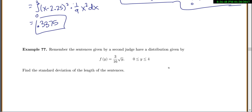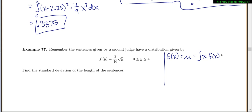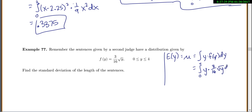Now a second judge has PDF f(y) = (3/16)√y, where y goes from 0 to 4. First step: always find the expected value. The expected value of x — or mu — equals the integral of x times f(x) dx. So we integrate from 0 to 4 of y times (3/16)√y dy. This equals 2.4, so that's the average for this judge.